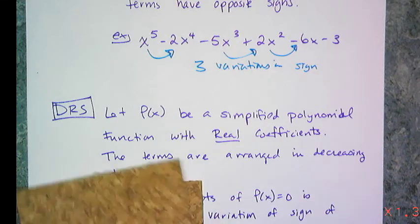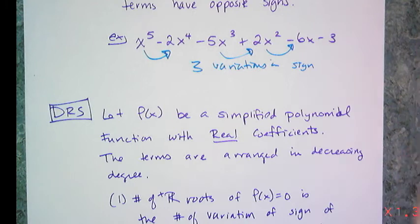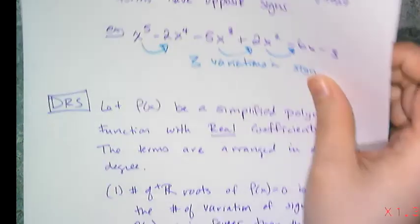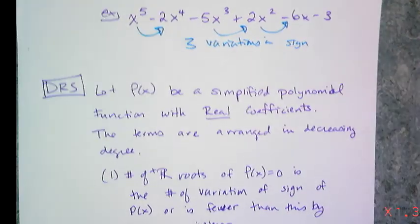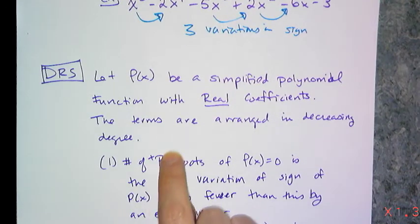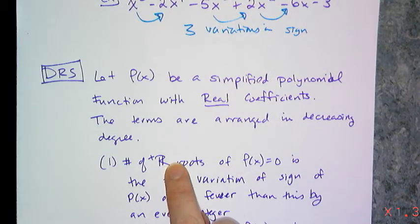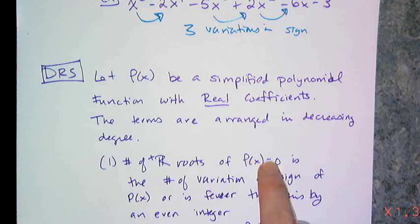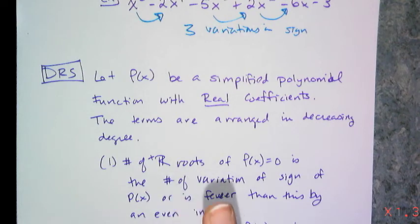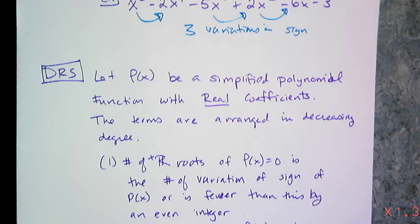Once you have all that set up, you have two portions of the theorem. The first portion says that the number of positive real roots of p(x) = 0 is equal to the number of variations of sign of p(x), or — and this is why it's annoying — fewer than this by an even integer.